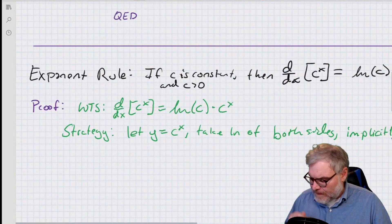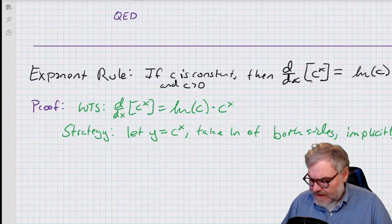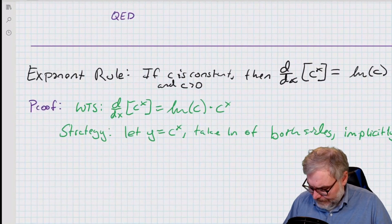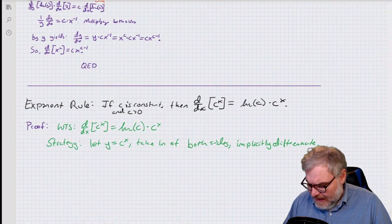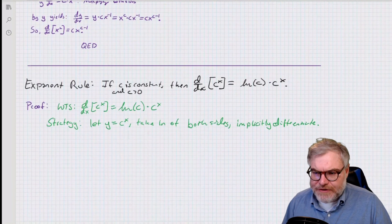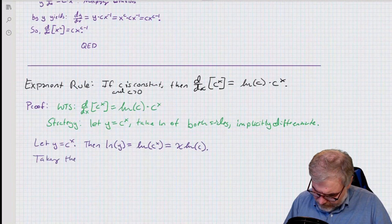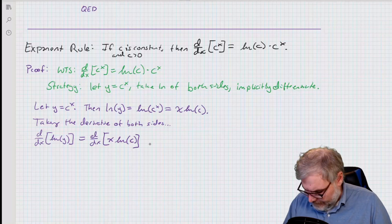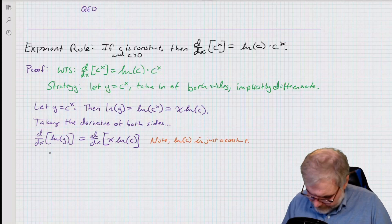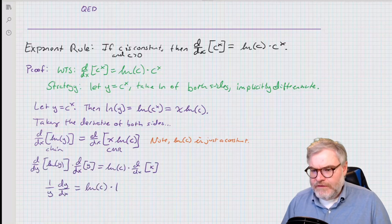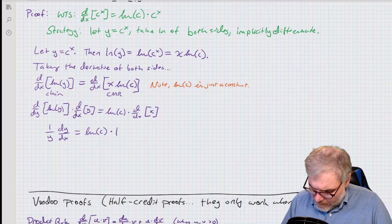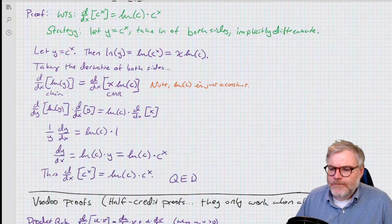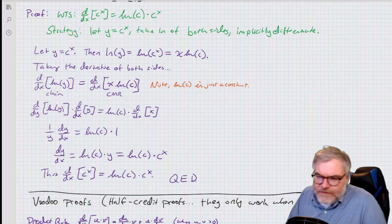This is the exponential rule. If c is a constant and c is greater than zero, then the derivative with respect to x of c to the x equals the natural log of c times c to the x. I'm going to do pretty much the exact same thing as before — just a little voodoo. I don't need a product rule here because ln of c is just a constant, so I just use the constant multiple rule. The derivative of x with respect to itself is simply one. I multiply y over to both sides and sub back in for y, and now I've proved it.